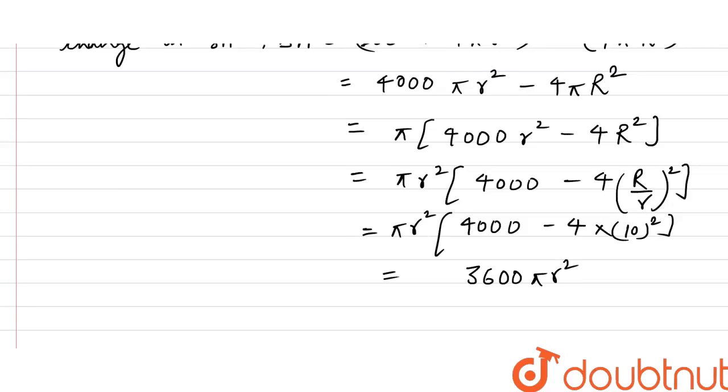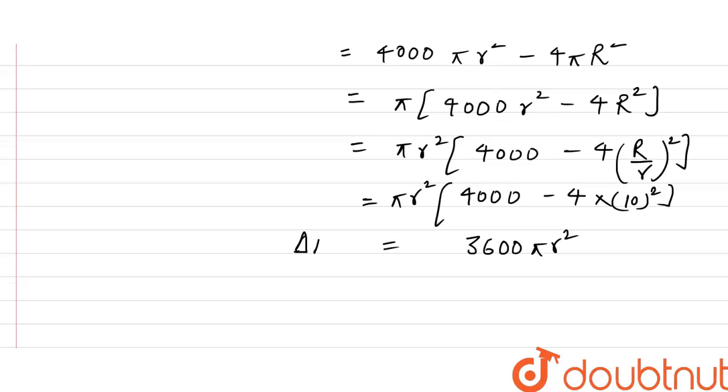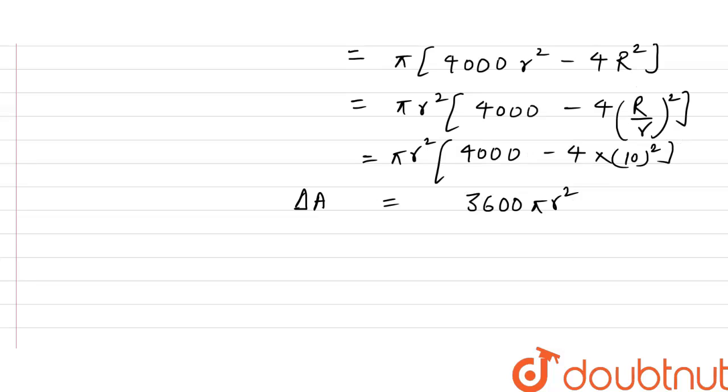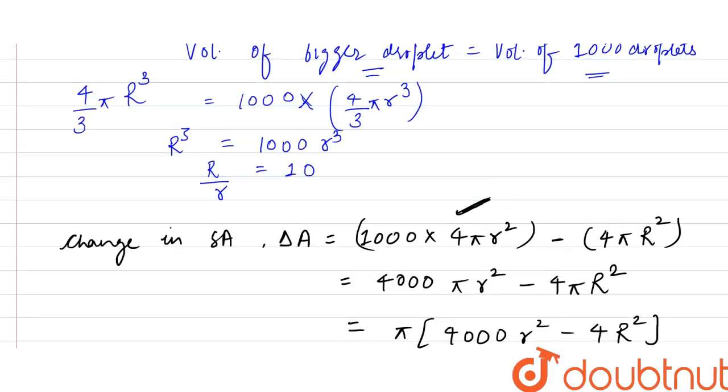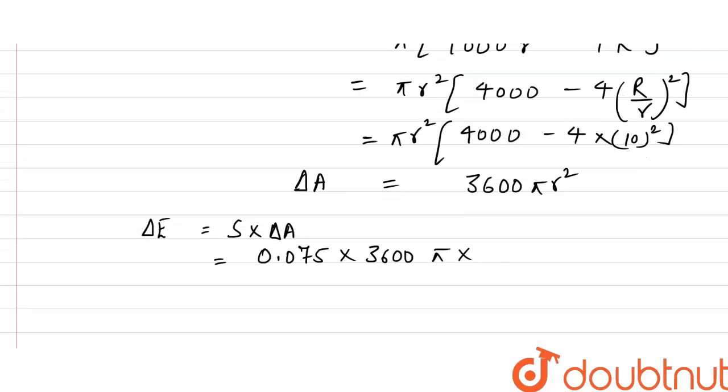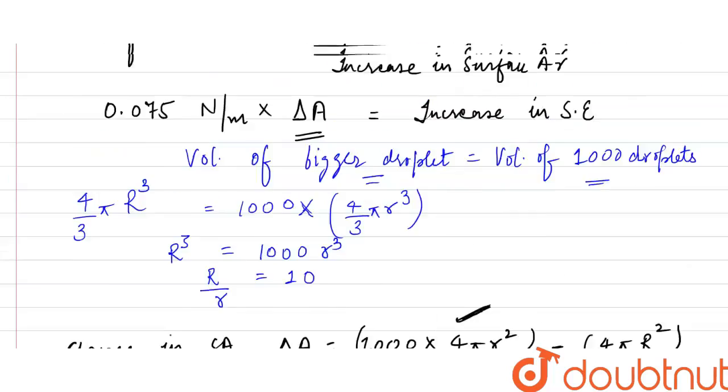This is change in the surface area. We know change in surface energy delta E is equal to surface tension into change in area. Surface tension is given to be 0.075 into change in area is 3600 pi r square.